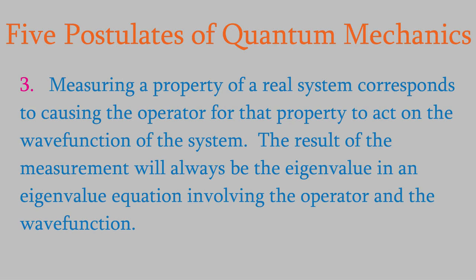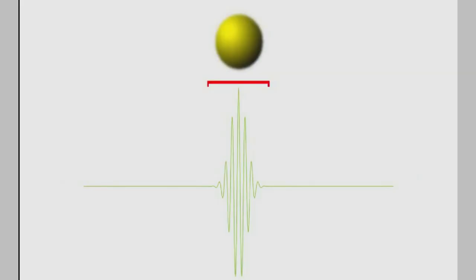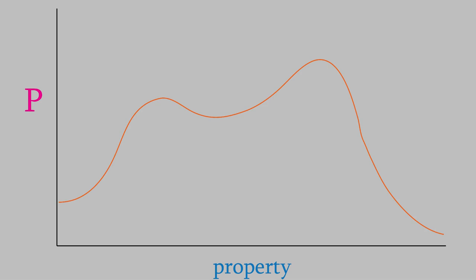As we saw in video three, the fact that systems behave like waves means that their properties usually don't have a precisely defined value. For example, it's not correct to say that a system has a precise position. Instead, we can only say that the system has a certain probability of being in a particular region of space. For example, if we're looking at an electron, it might have a 95% probability of being in this region. Since there's a distribution of values that a particular property can have rather than a single value, we usually want to know the mean or average value of the property.